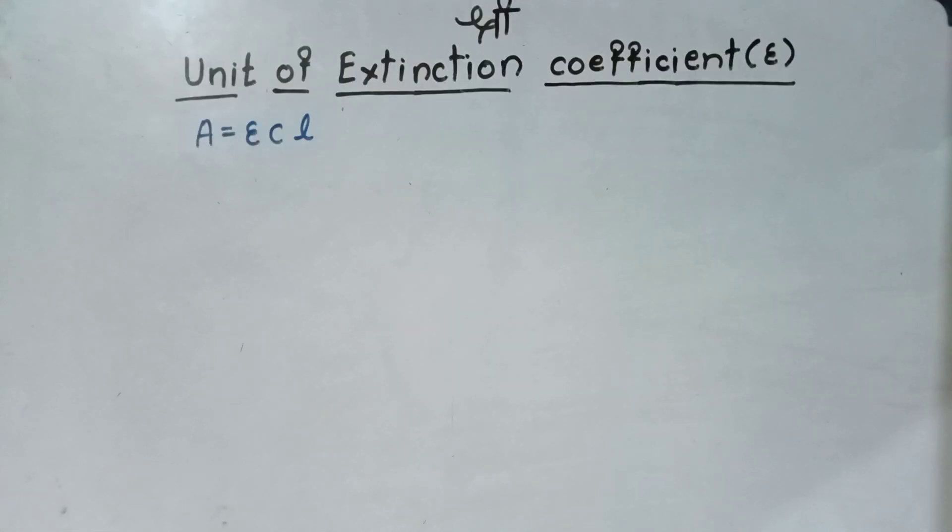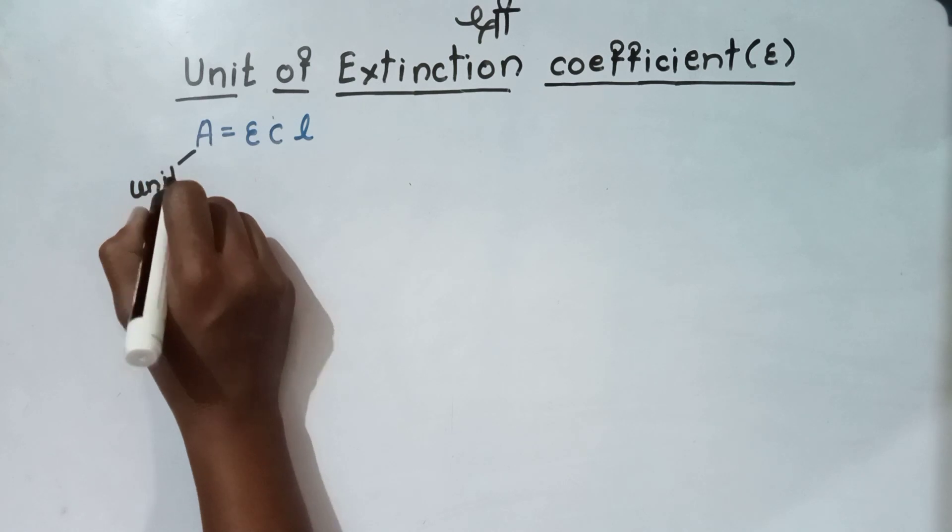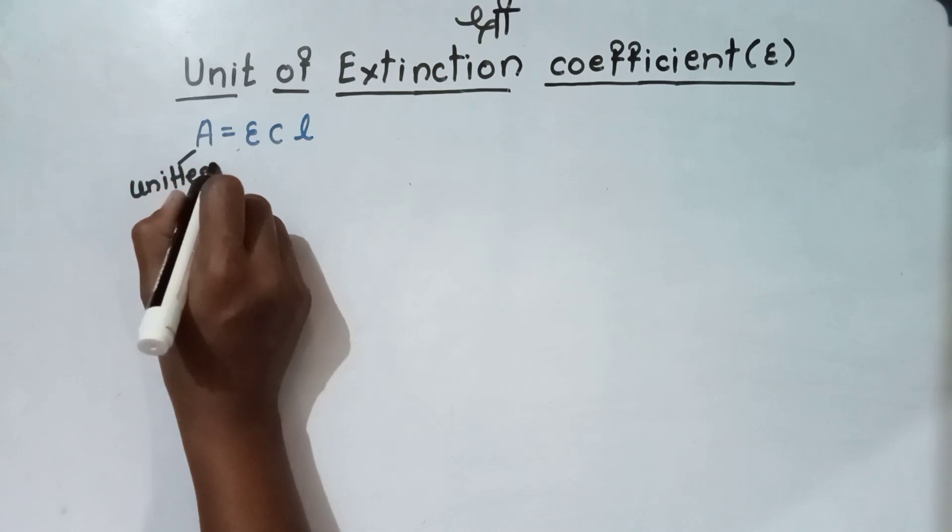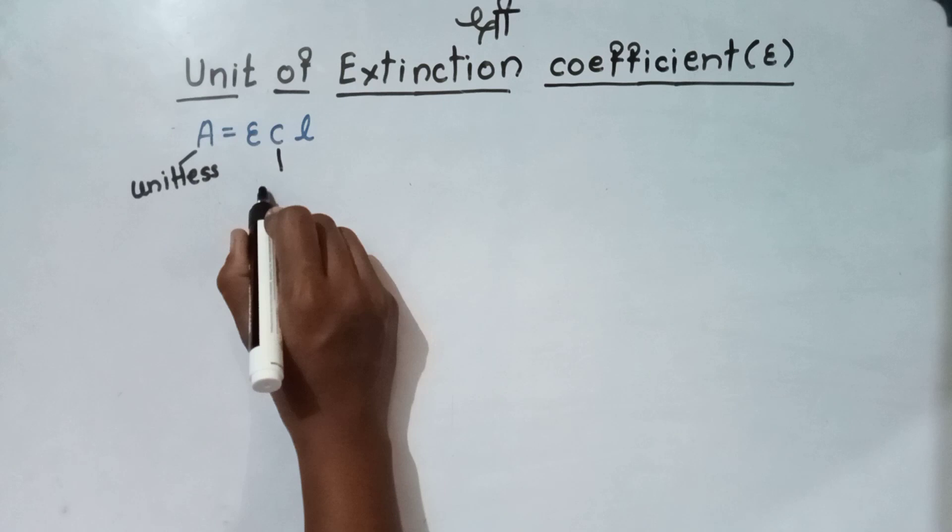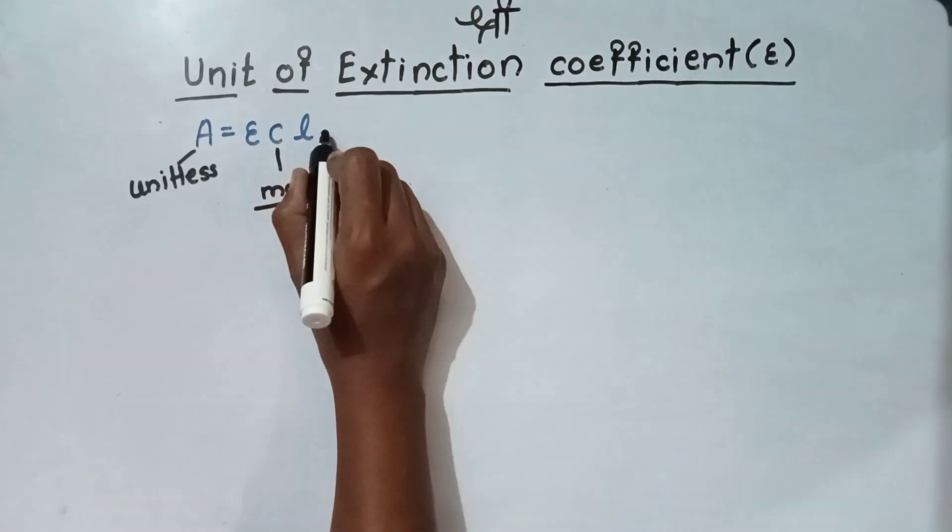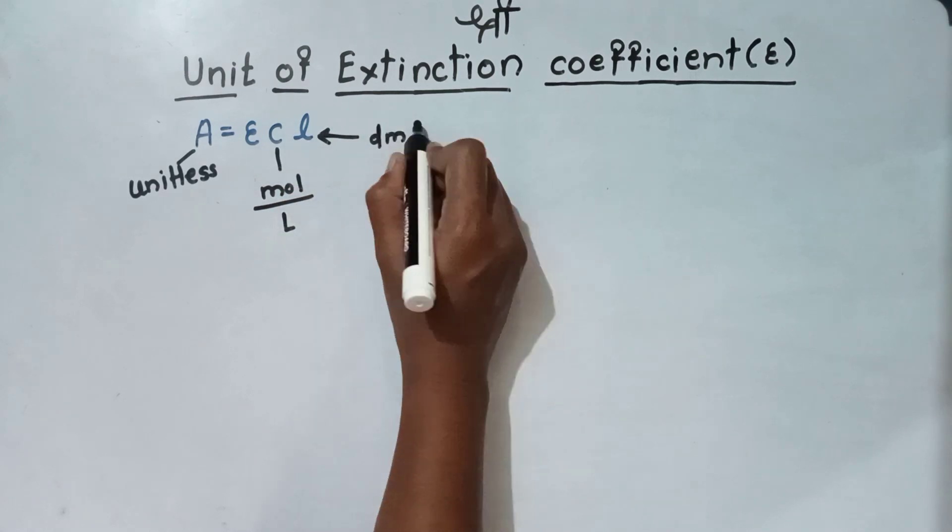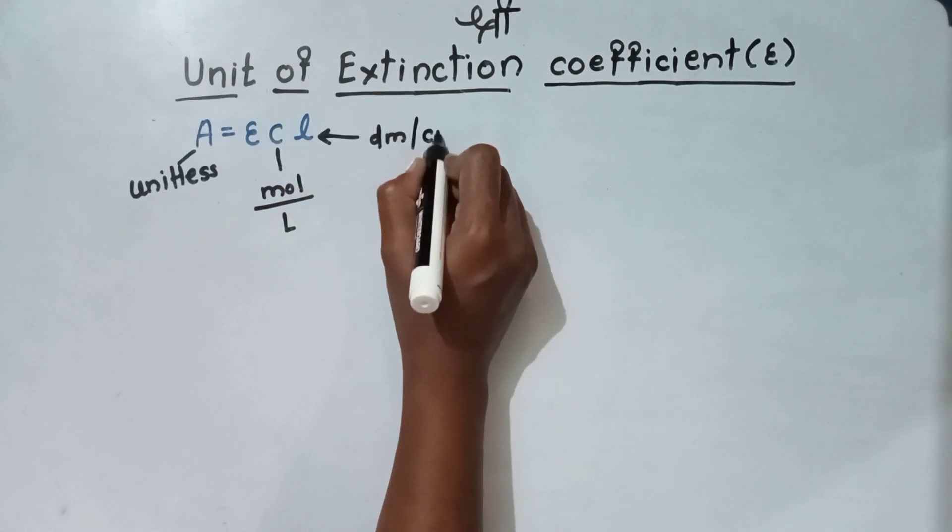Whereas, A is the unitless quantity. And C is the concentration in the form of mole per liter. Whereas, length is in the form of decimeter as well as sometimes it will be in the form of centimeter.